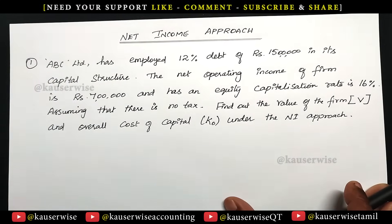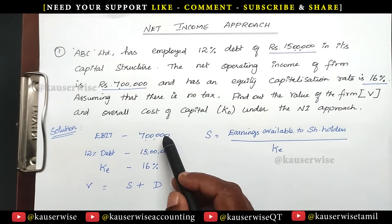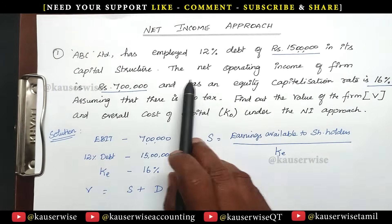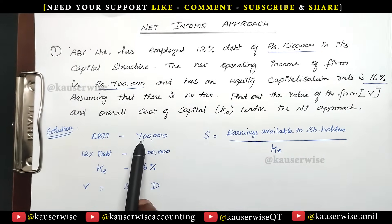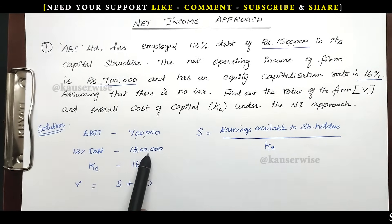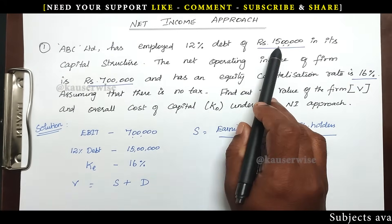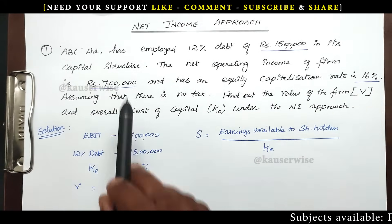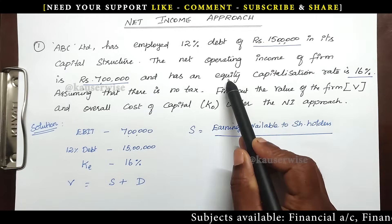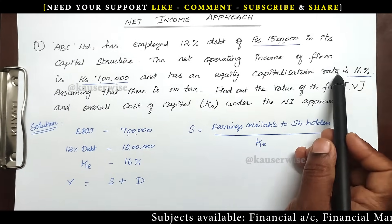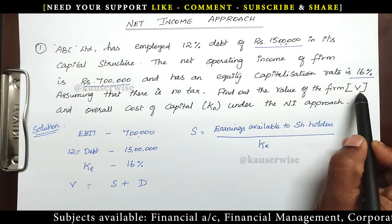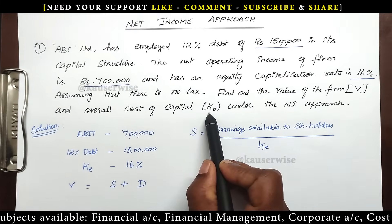Now let's see the solution. We have the following information from the problem: EBIT is ₹7 lakhs (the net operating income), D is ₹15 lakhs (12% debt in the capital structure), and KE, the cost of equity or equity capitalization rate, is 16%. With this information we are going to find out the value of the firm and overall cost of capital.